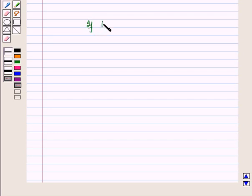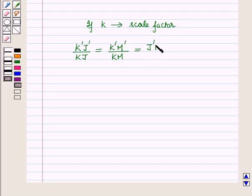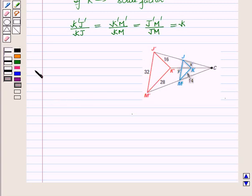Now these ratios are each equal to k. Now here we are given that K'M' is equal to 28 and KM is equal to 14, and also here we can see that K'M'/KM is equal to k.